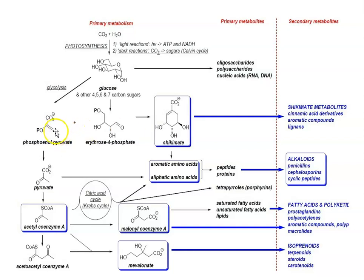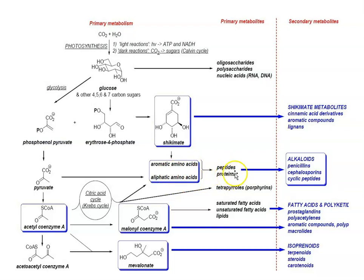Phosphoenolpyruvate, the ultimate end product of glycolysis, is then converted to pyruvate. Pyruvate acts as a starting material for the synthesis of primary metabolites such as aromatic amino acids, from which peptides or proteins are formed. These primary metabolites then act as precursors for the formation of secondary metabolites like alkaloids, penicillins, cephalosporins, and cyclic peptides.